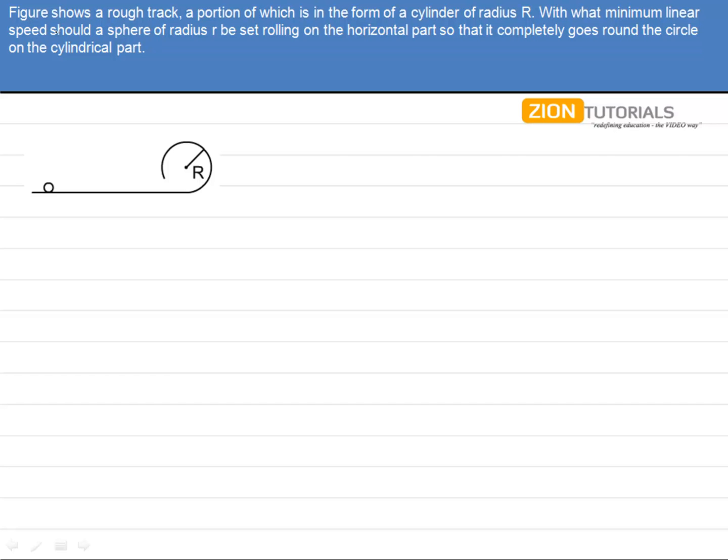As the question says, the figure shows a rough track, a portion of which is in the form of a cylinder of radius R. With what minimum linear speed should a sphere of radius r be set rolling on the horizontal part so that it completely goes round the circle on the cylindrical part? So we need to throw this ball with velocity v so that it covers the whole of this circle.